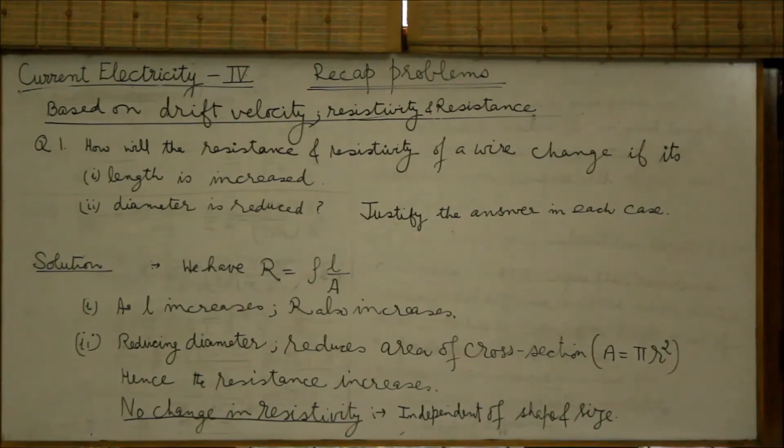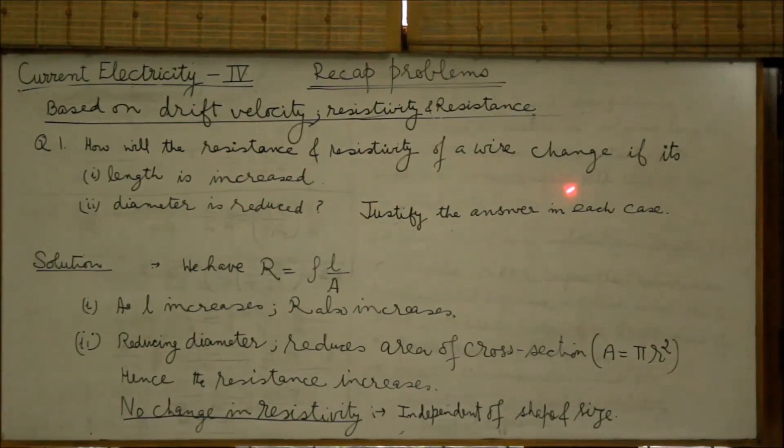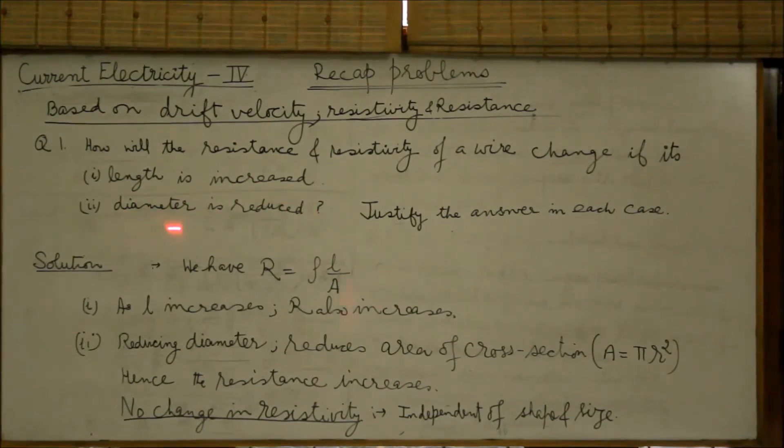Question number 1. How will the resistance and resistivity of a wire change if its length is increased and diameter is reduced? Justify the answer in each case.